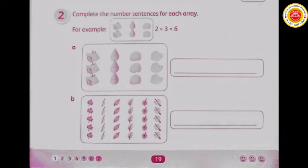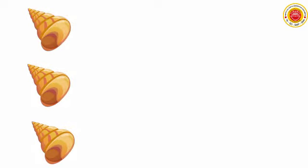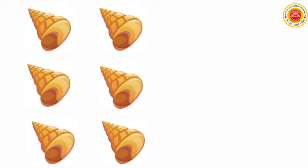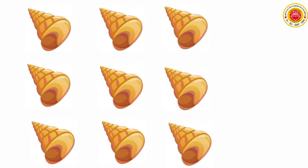Now the bottom section: complete the number sentences for each array. You must calculate using multiplication, counting row by row. We count by rows so we can calculate faster. Look — one row has three shells. The second row also has three shells, so two rows times three per row equals six shells. The third row also has three shells, so three times three equals nine.